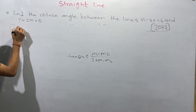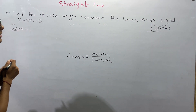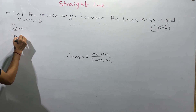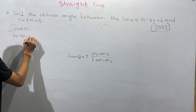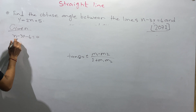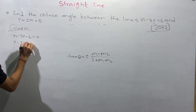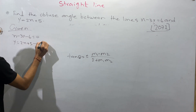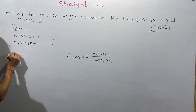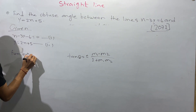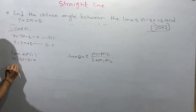The given equations are: equation 1 — x minus 3y minus 6 is equal to 0, and equation 2 — y is equal to 2x plus 5.